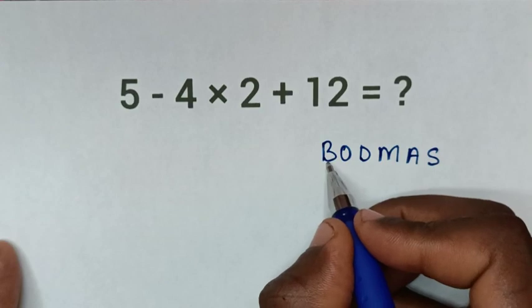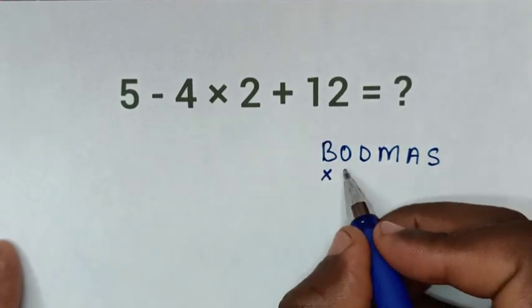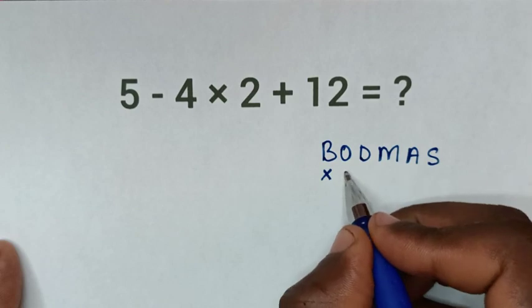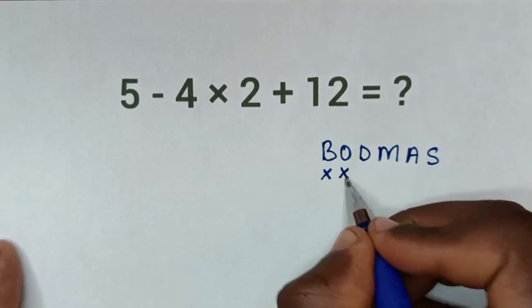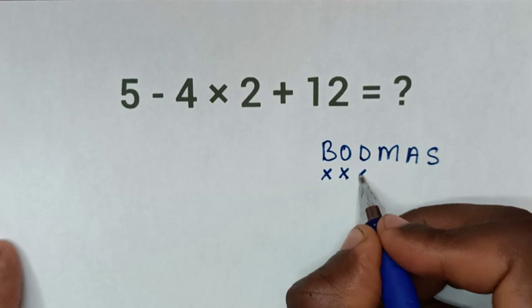B for bracket - we don't have brackets in our problem. O for order or exponent - we don't have this either. D for division - we don't have division.